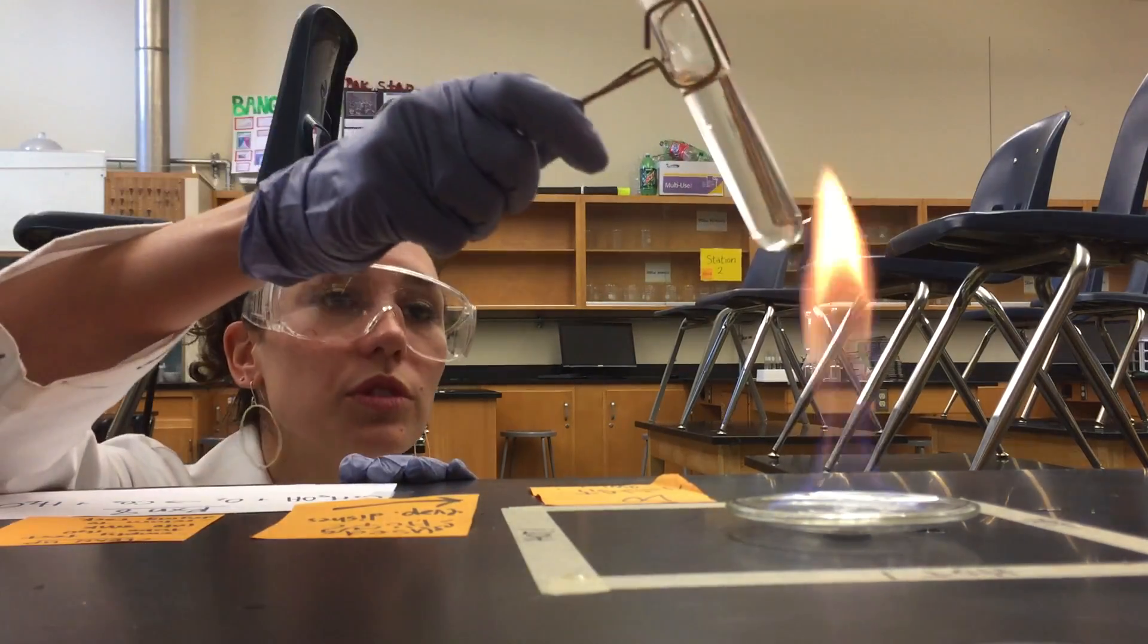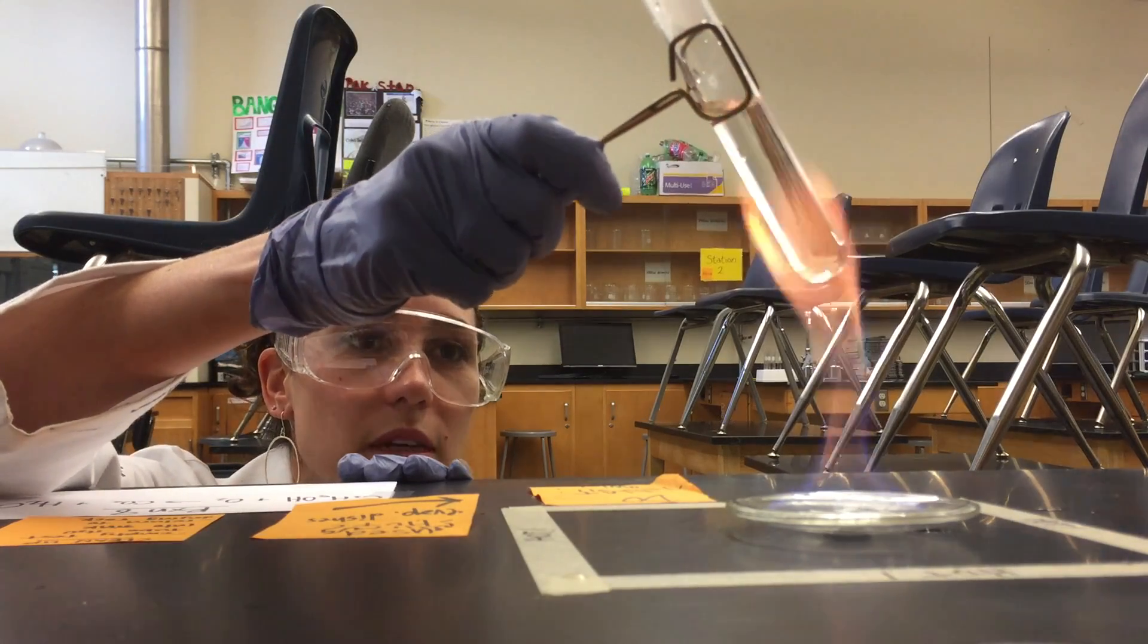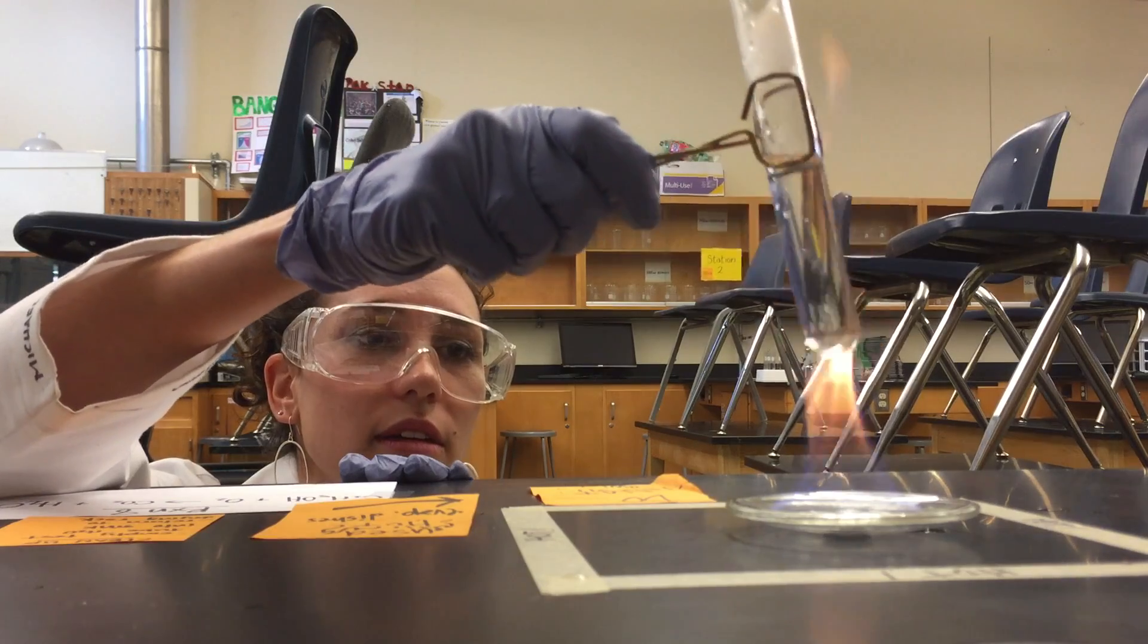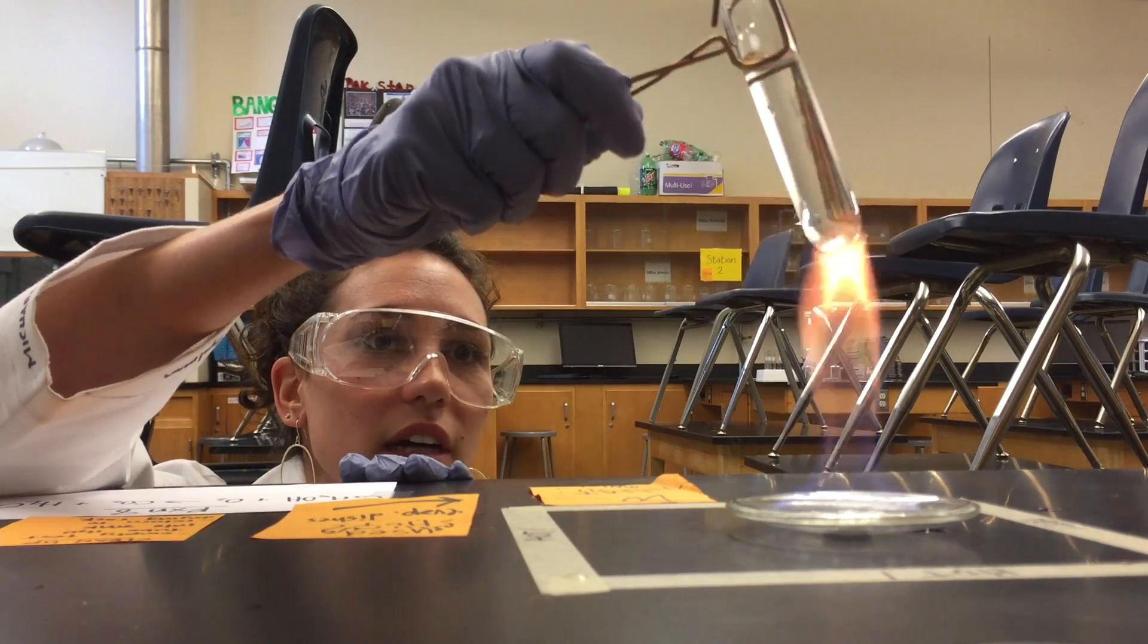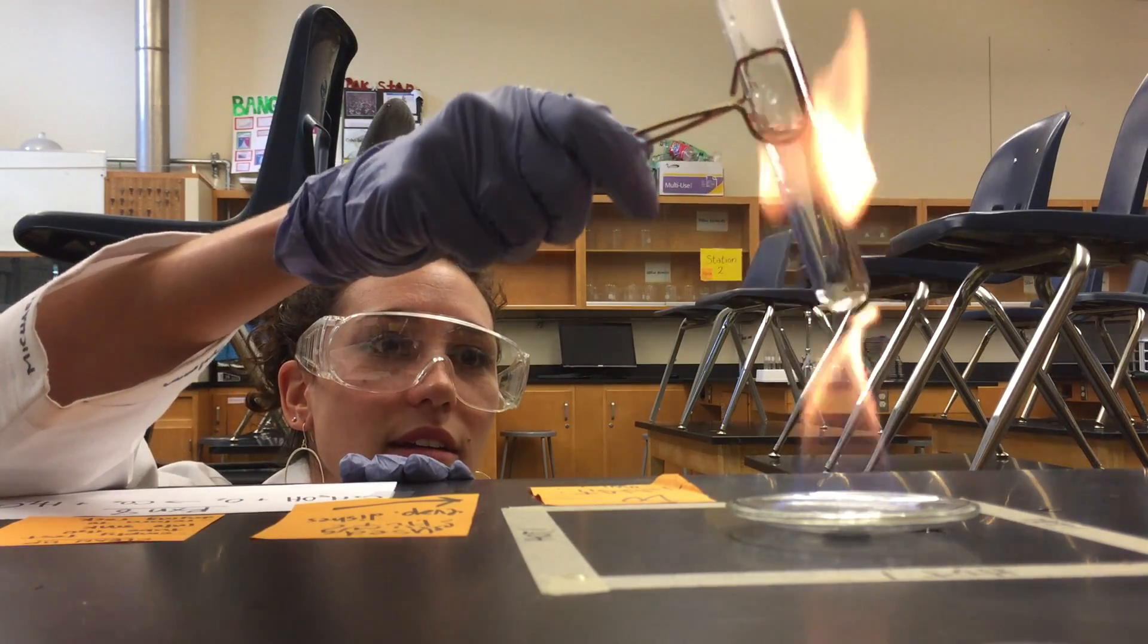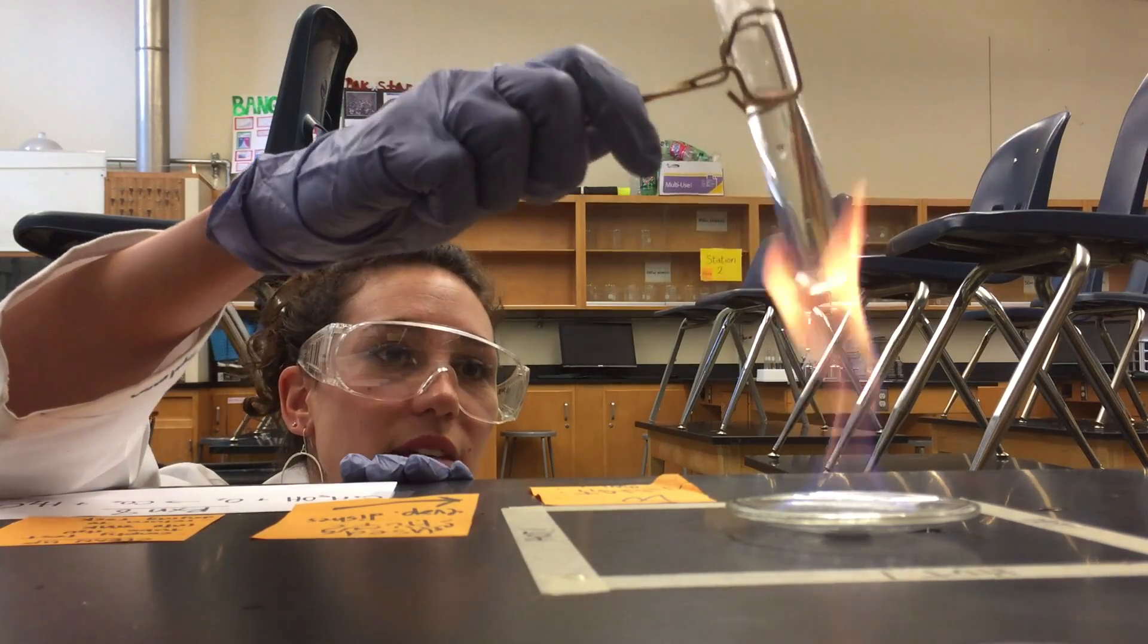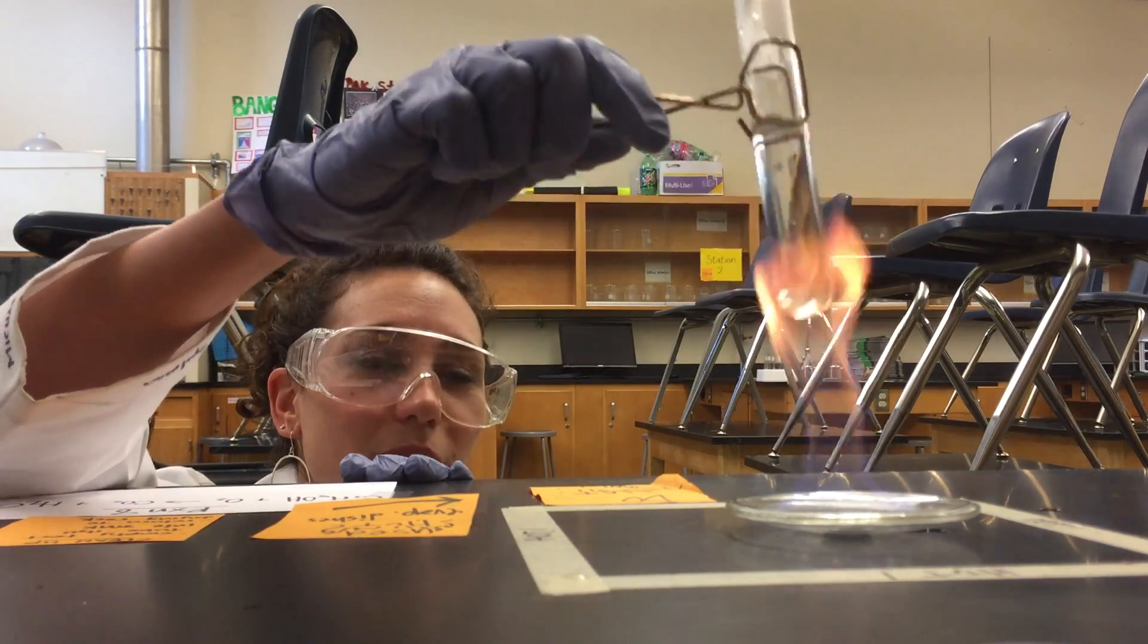So when I hold this cool test tube over it, we should be able to see water condense on the outside of this test tube. Now it's starting to get a little foggy—we can definitely see water condensing on the outside. Beautiful.